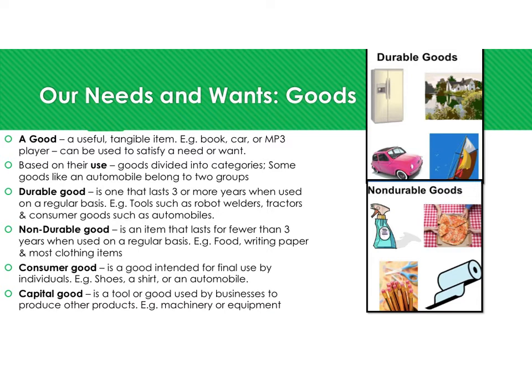A consumer good is a good intended for final use by individuals, such as a shirt, a donut, a piece of fried chicken, or a pizza. A capital good is a good used to make consumer goods. For example, the chicken is the capital good because it produces the egg, which is the consumer good if you crack it open and make an omelet.